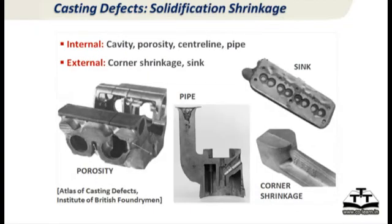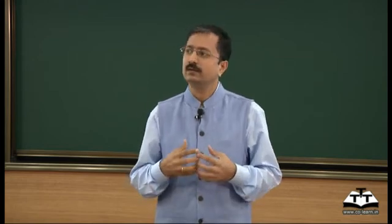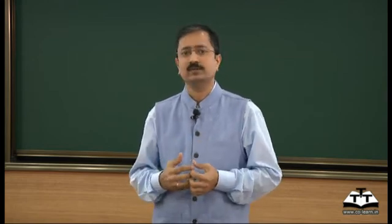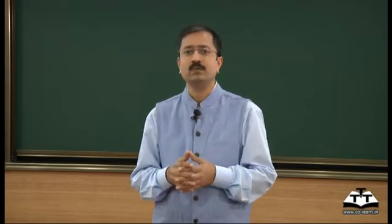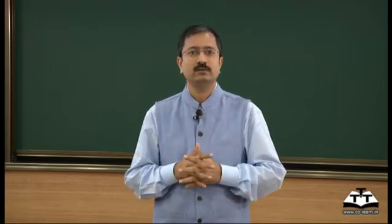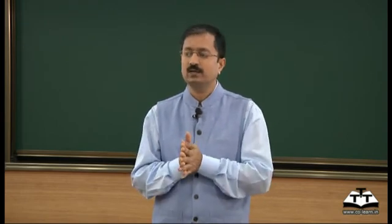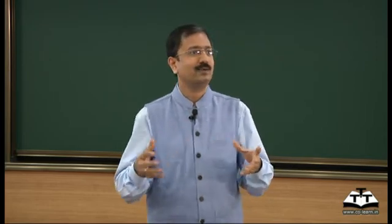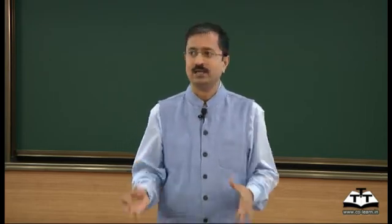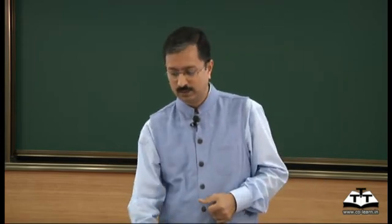Shrinkage is the third step. When the casting is solidifying, you can get either internal or external shrinkage. There are three different types: porosity is small shrinkage — often confused with gas porosity, but we will shortly see how to distinguish them clearly. Then you may have pipe extending into the casting, or a sink or corner shrinkage. These are all different varieties of shrinkage defects, and we will look at why and how they form and how to control them.